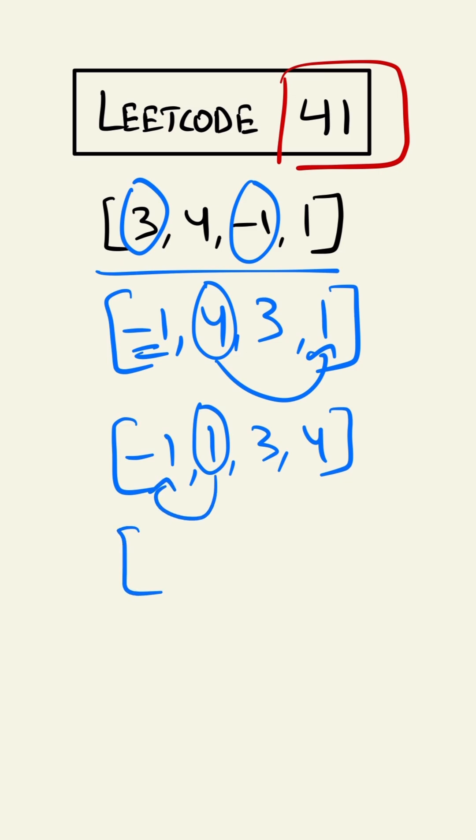So our last substitution would be 1, minus 1, 3, and 4. Now we have placed all the numbers at their correct index.